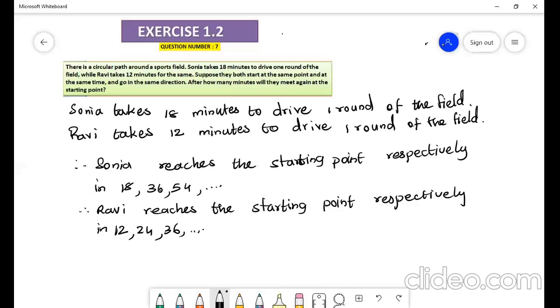When Sonia reaches the starting point in 18 minutes, Ravi is not at the starting point. When Sonia reaches in 36 minutes at the starting point, Ravi also reaches the starting point in 36 minutes. For Sonia it is the second round completed and for Ravi it is the third round completed. At 36 minutes both of them are at the same starting point, therefore they meet again at 36 minutes.